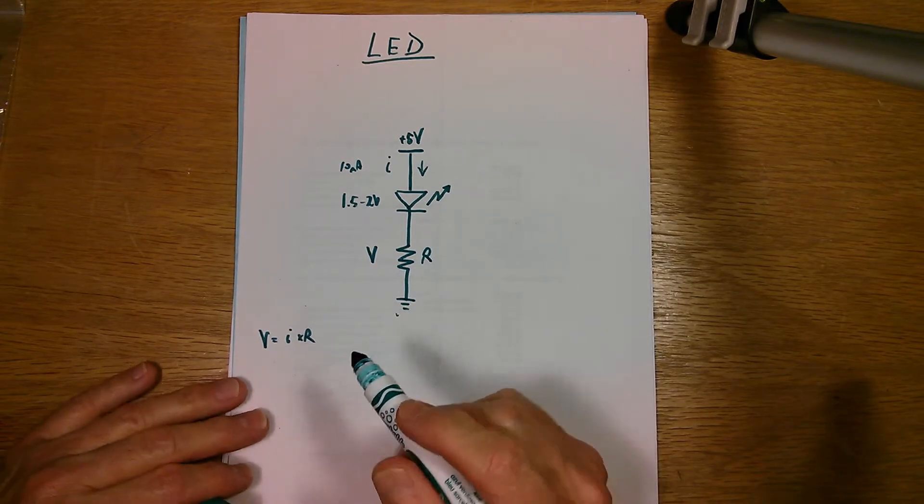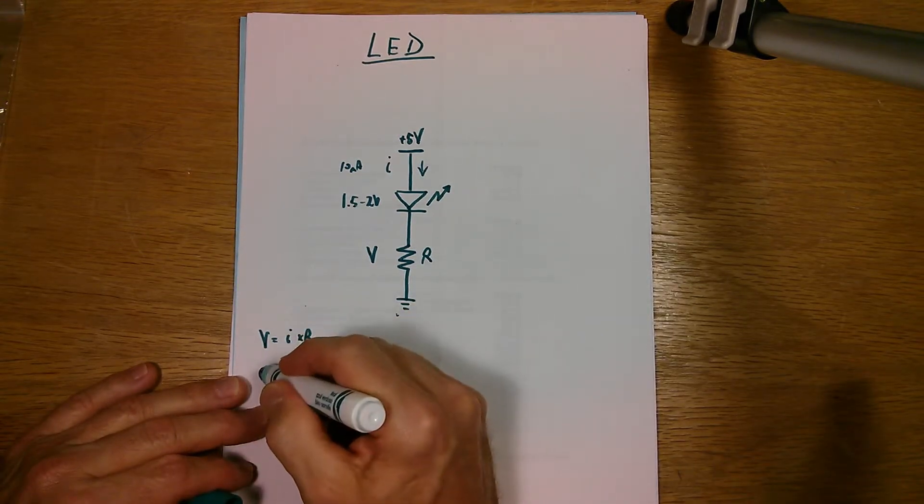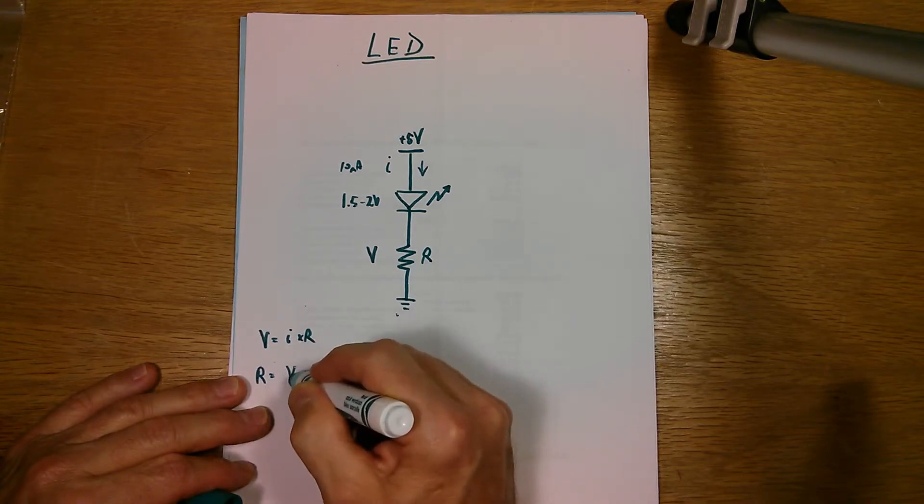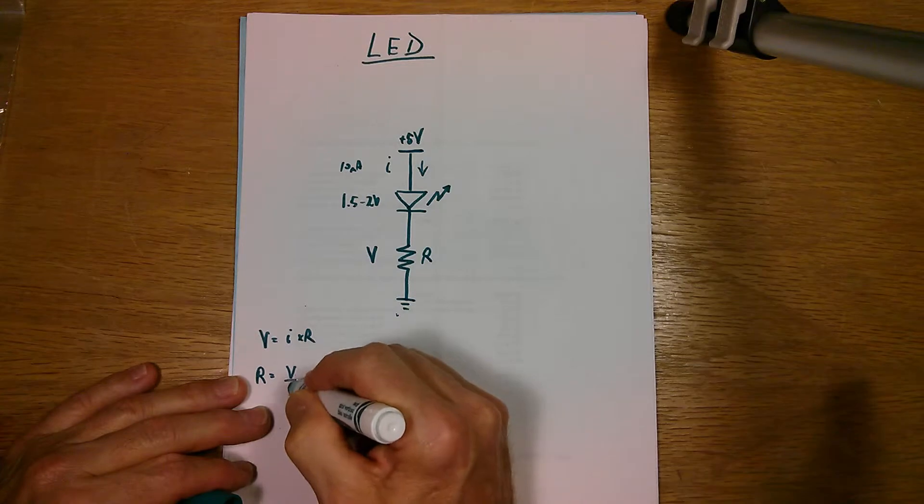So I want to figure out what the resistor is. So I'll rearrange my Ohm's law equation to be R equals V across the resistor divided by I.